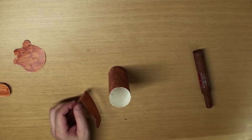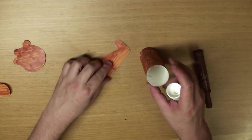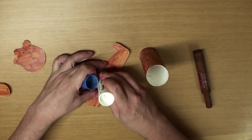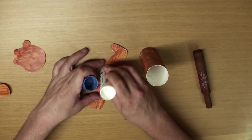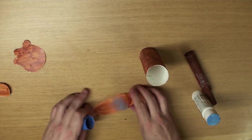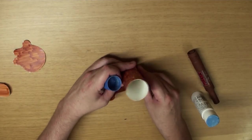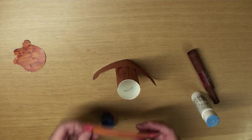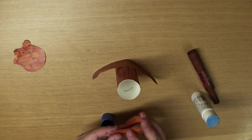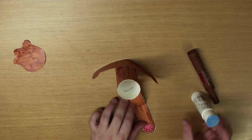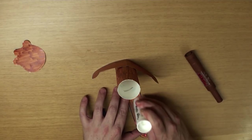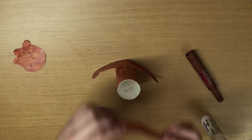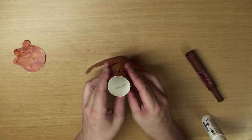Fold his legs and put on some glue, and we'll glue those onto the tube like this. And do the same with his arms. Fold it like this, put on some glue, and stick it on.